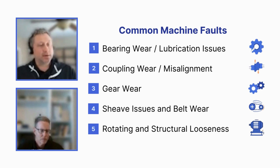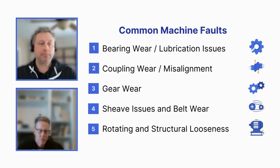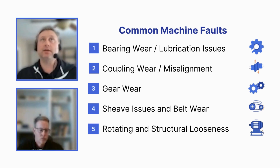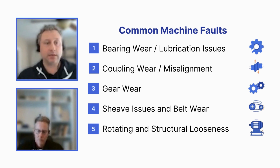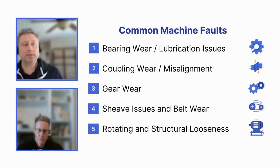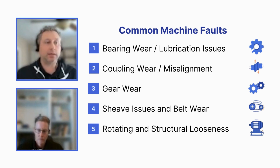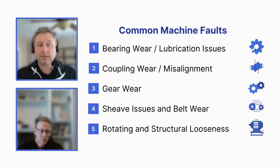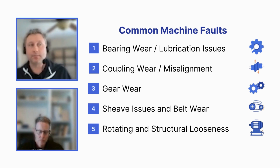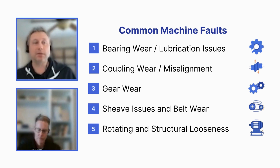Gear wear is an interesting one because it shows up as what we call gear mesh frequency. The gear mesh frequency is simply the number of teeth on the shaft multiplied by the shaft speed. A gearbox has multiple shafts and multiple sets of teeth, so you can end up with multiple gear mesh frequencies. There are also secondary frequencies involved that can help point to whether it's a broken tooth, misaligned gears, or just general tooth wear.